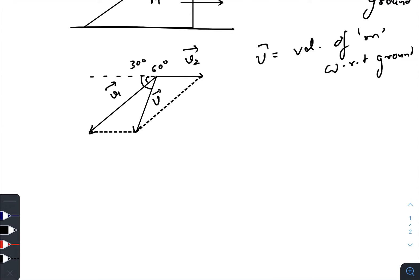Now we will just use simple vector addition. These two vectors are creating this vector, so the perpendicular component of the resultant, that is v sine 60 or v sine phi, would be v1 sine theta.